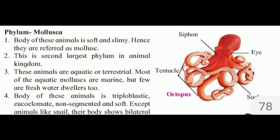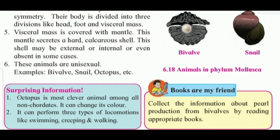The body of these animals is triploblastic, eucoelomate, non-segmented, and soft. Except for animals like snails, their body shows bilateral symmetry. Their body is divided into three divisions: head, foot, and visceral mass.